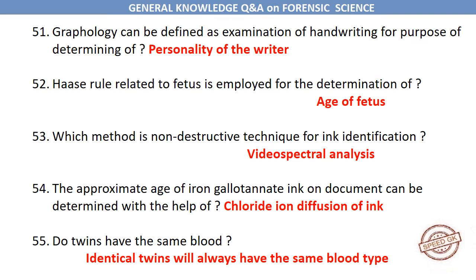In handwriting, a short initial or terminal stroke is called a spur. Graphology can be defined as examination of handwriting for the purpose of determining the personality of the writer. Hase's rule related to a fetus is employed for the determination of the age of a fetus. Which method is a non-destructive technique for ink identification? Video spectral analysis.